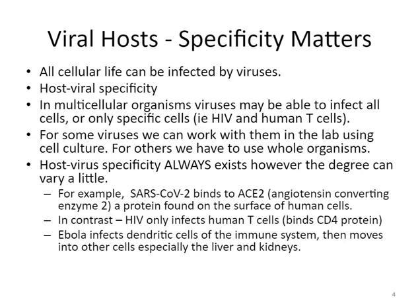HIV will only infect human T cells and is specific just to humans — the H stands for human immunodeficiency virus. SARS-CoV-2 can infect humans and other animals if the ACE2 receptor is present on the surface of those cells. Ebola virus infects the dendritic cells of the immune system and then moves into other cells, especially the liver and the kidneys. It's another example of a zoonotic virus in that it can infect other things, for example bats.